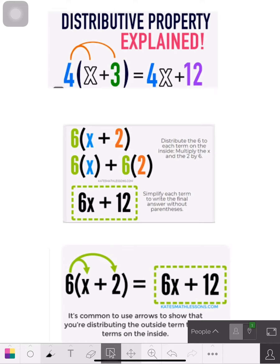You multiply the 4 times the x so you get 4x. You multiply the 4 times the 3, you get 12. So the answer is actually 4x plus 12. And that's all there was to that.